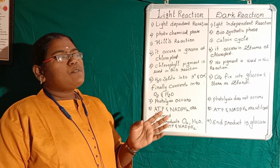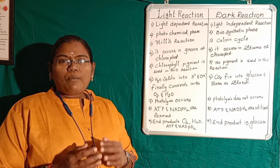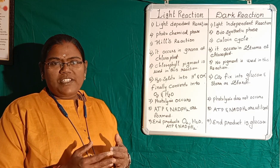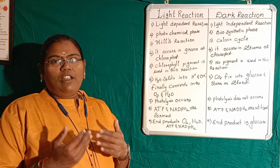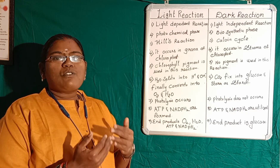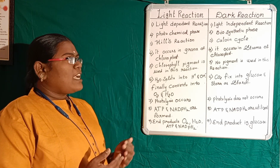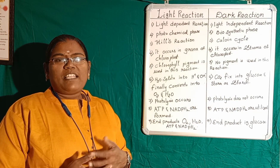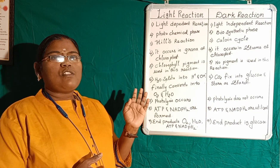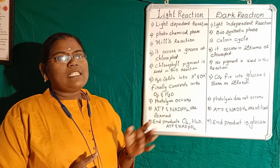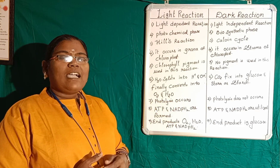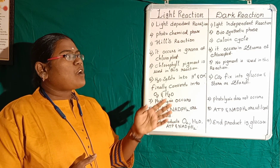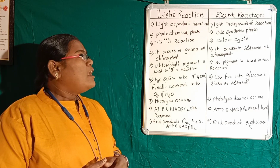Coming to the dark reaction, it is called the biosynthetic phase. In this reaction, a biomolecule like glucose is going to be synthesized. These reactions were explained by Robert Hill, so it is also called Hill's reaction. The dark reaction was explained by Melvin Calvin, and that is why it is called the Calvin cycle.